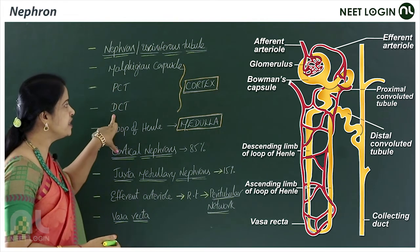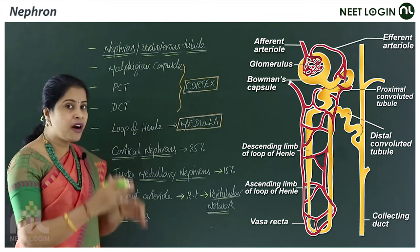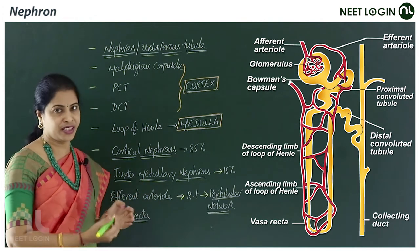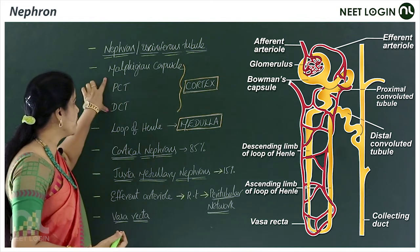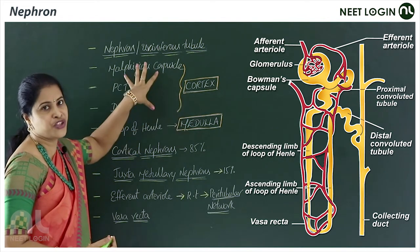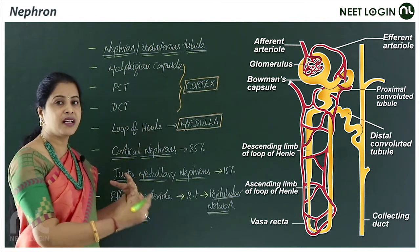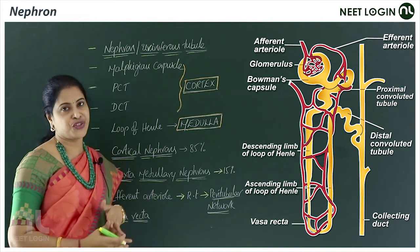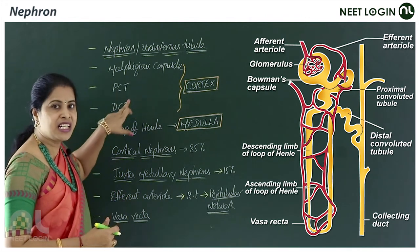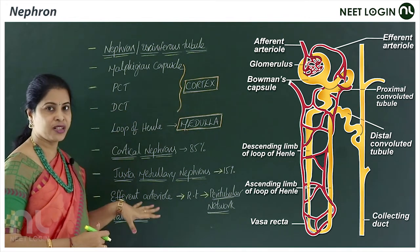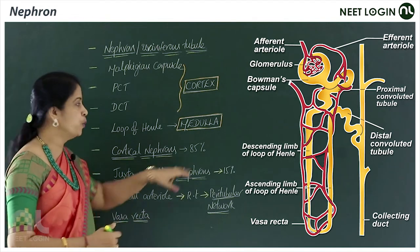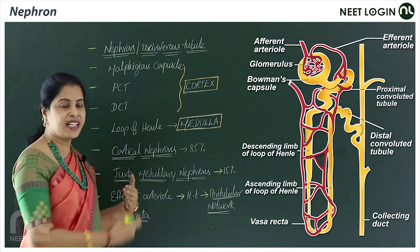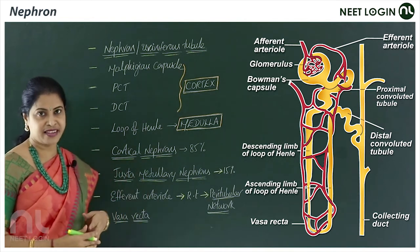The Malpighian corpuscle, PCT, and DCT are all located in the cortex region of the kidney. The Malpighian corpuscle (glomerulus + Bowman's capsule) and also the PCT and DCT are in the cortex, whereas Henle's loop is located in the medullary region.